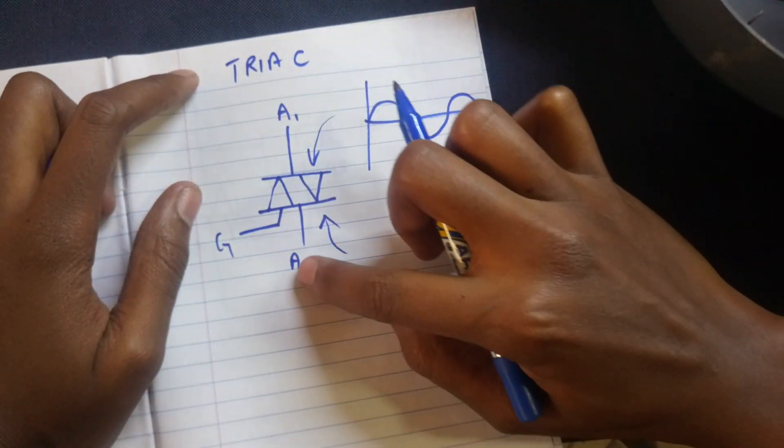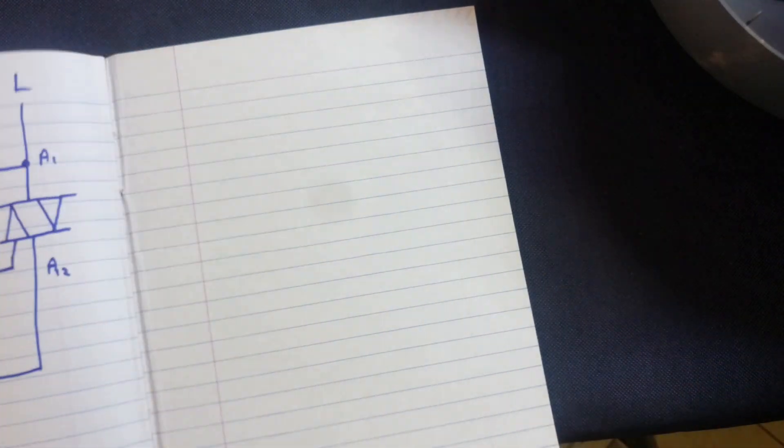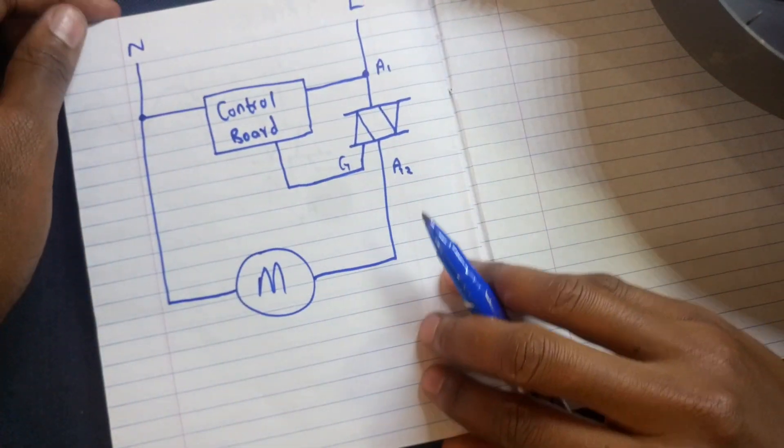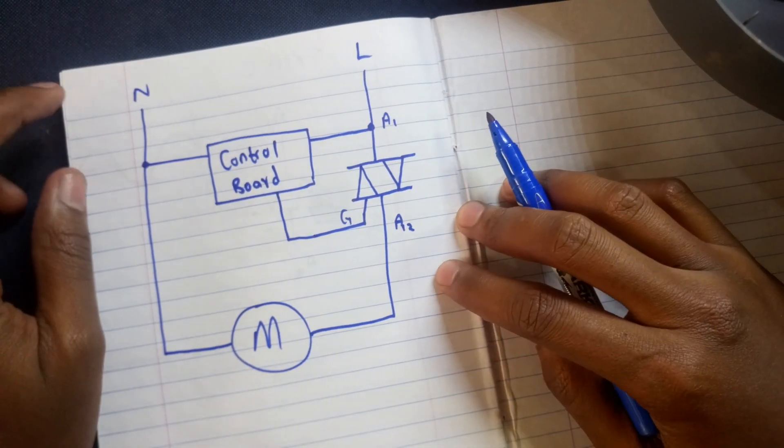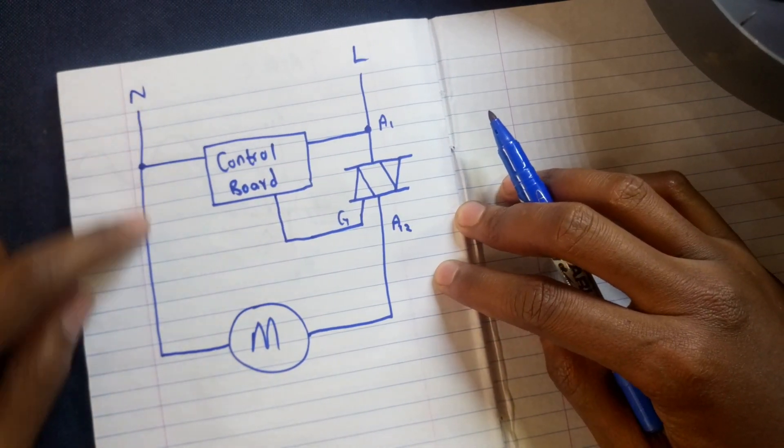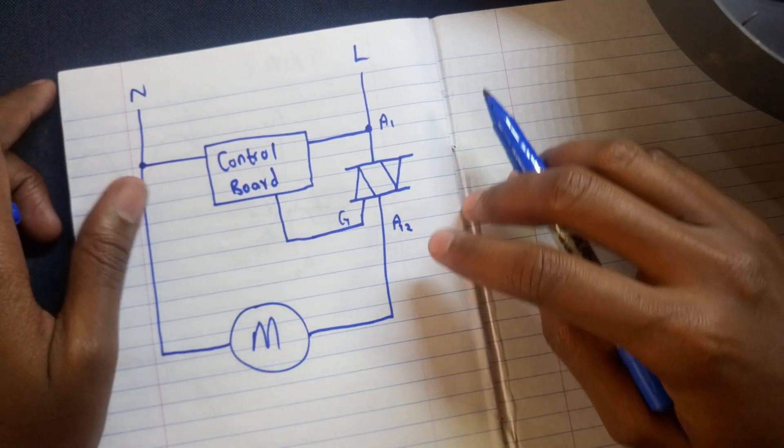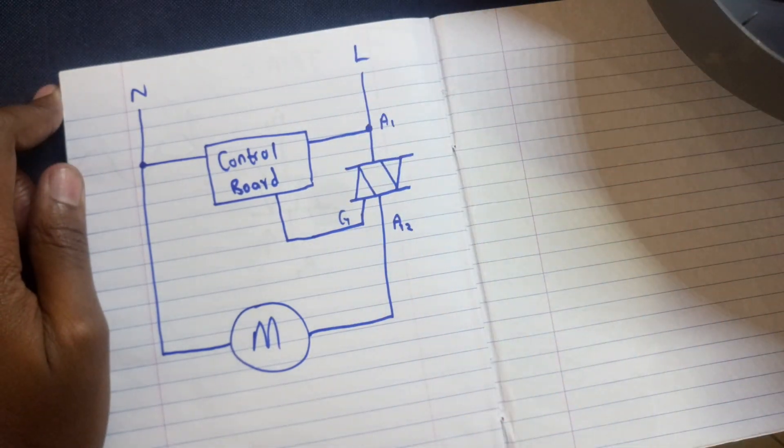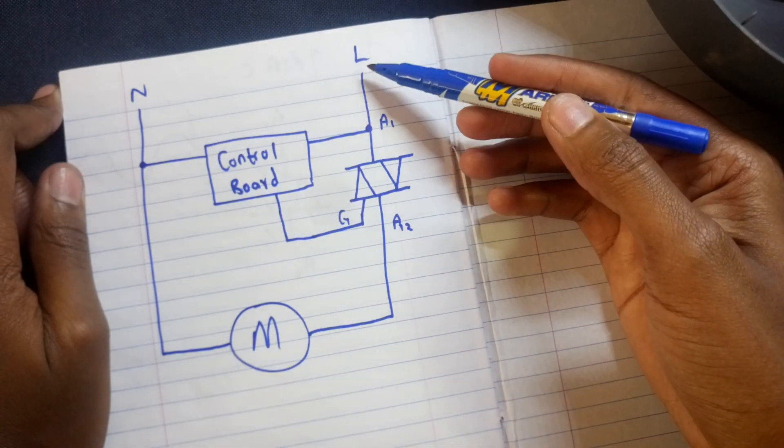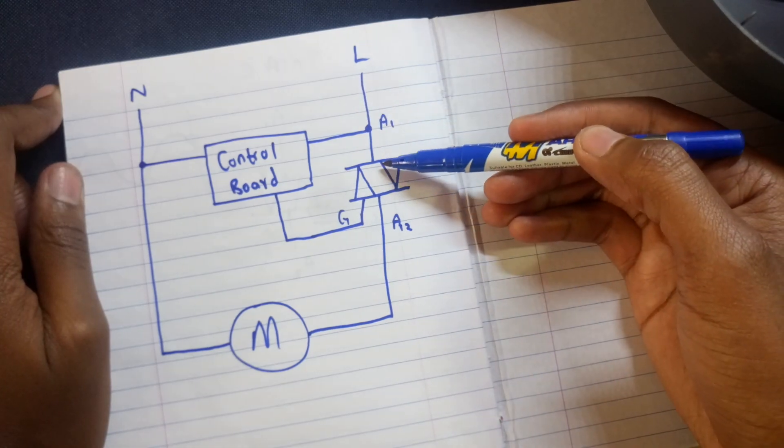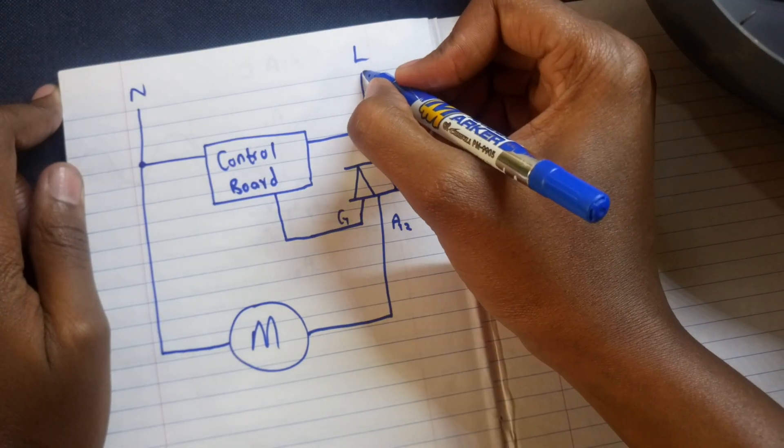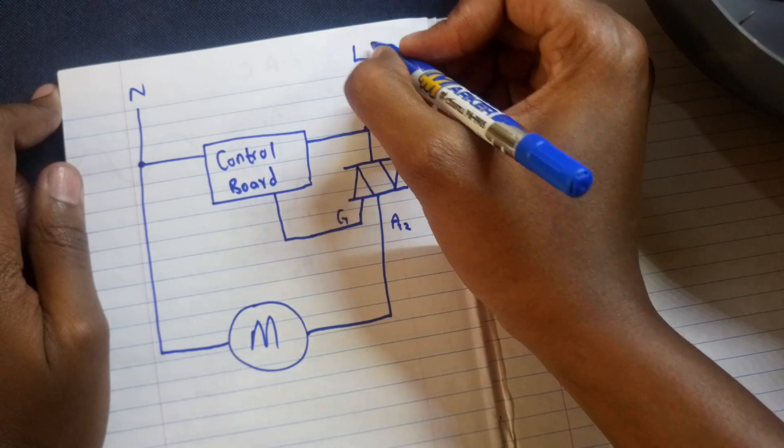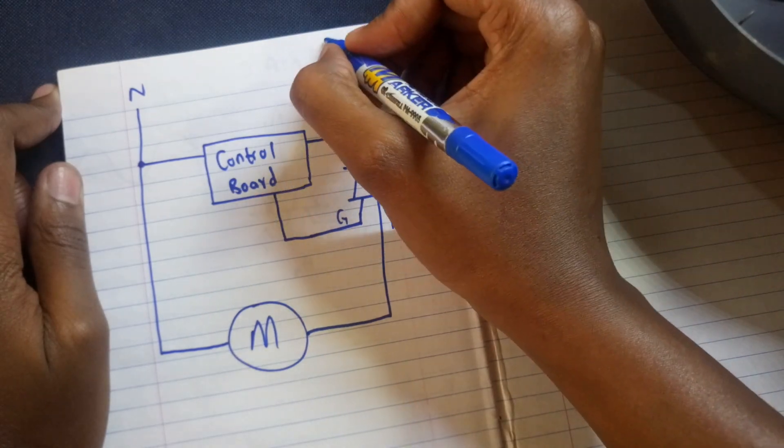When we come back to a vacuum cleaner, this is the circuit diagram that we have. I've shown you the neutral that goes to the motor and the live. What happens in this circuit is that the live usually goes through a triac first, but here we have a switch first.